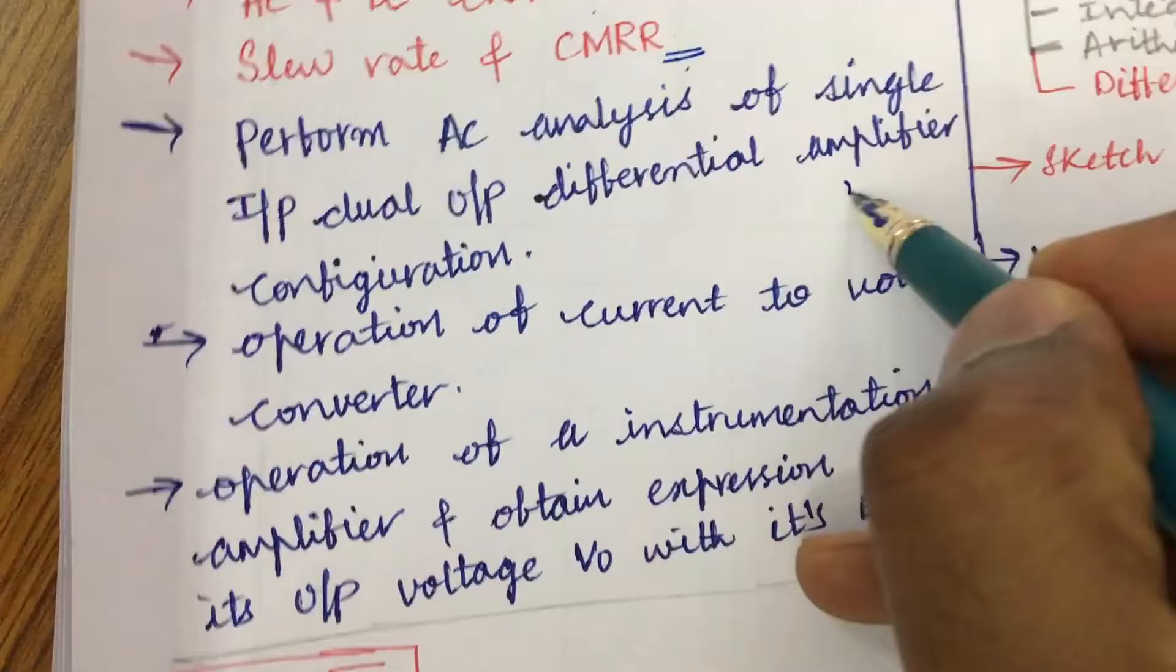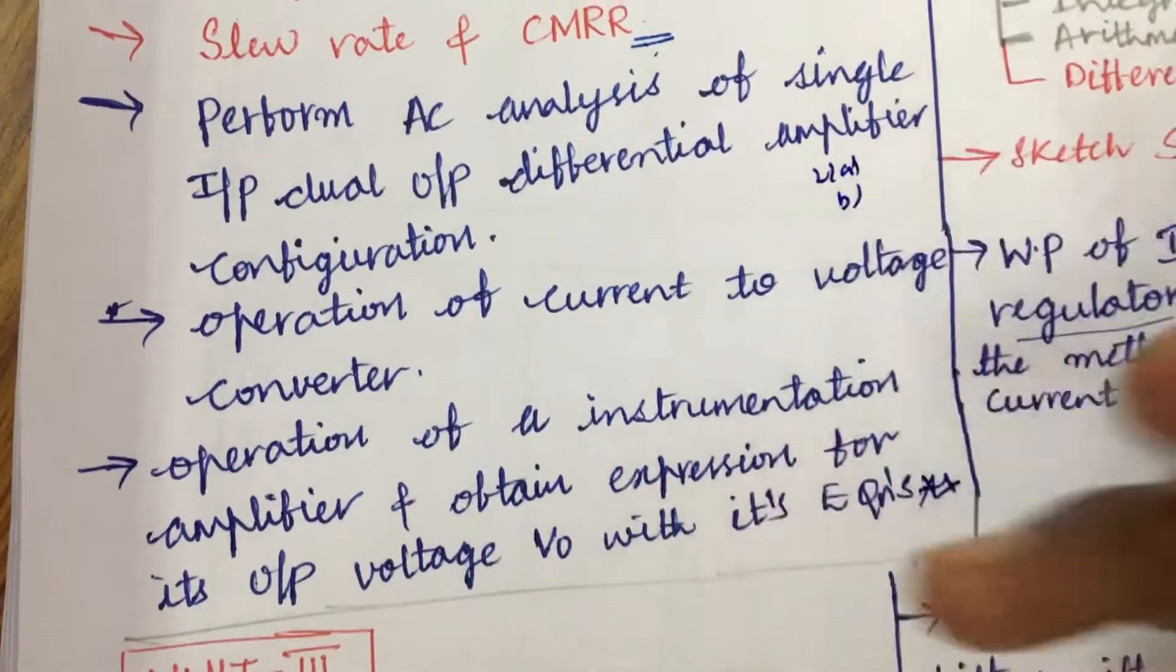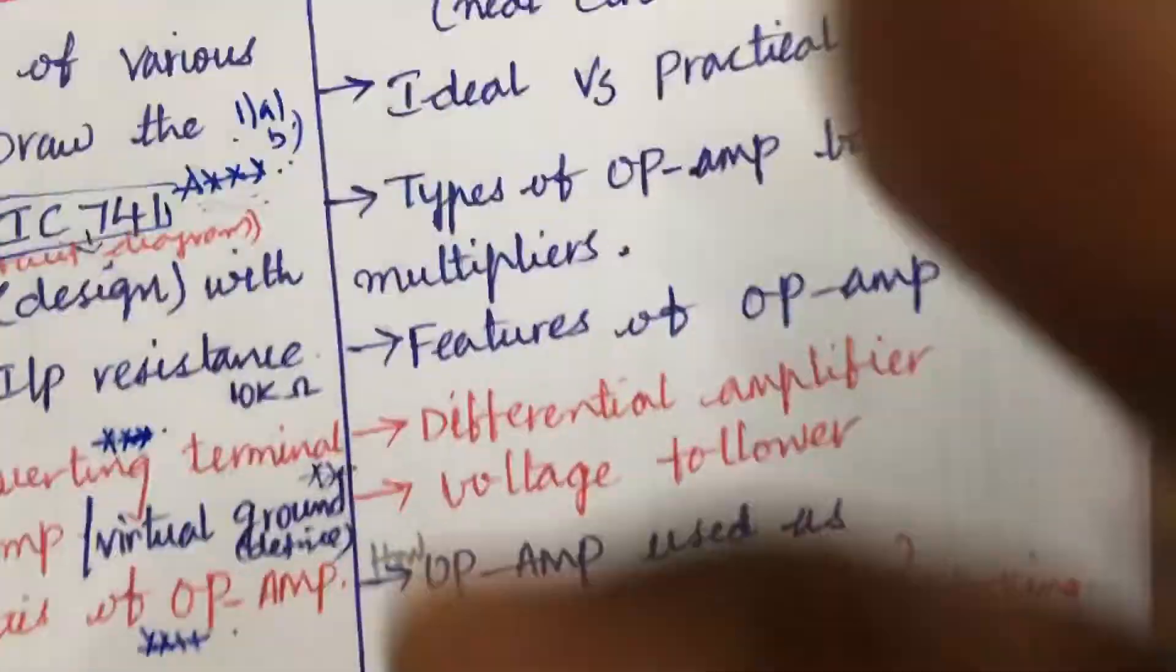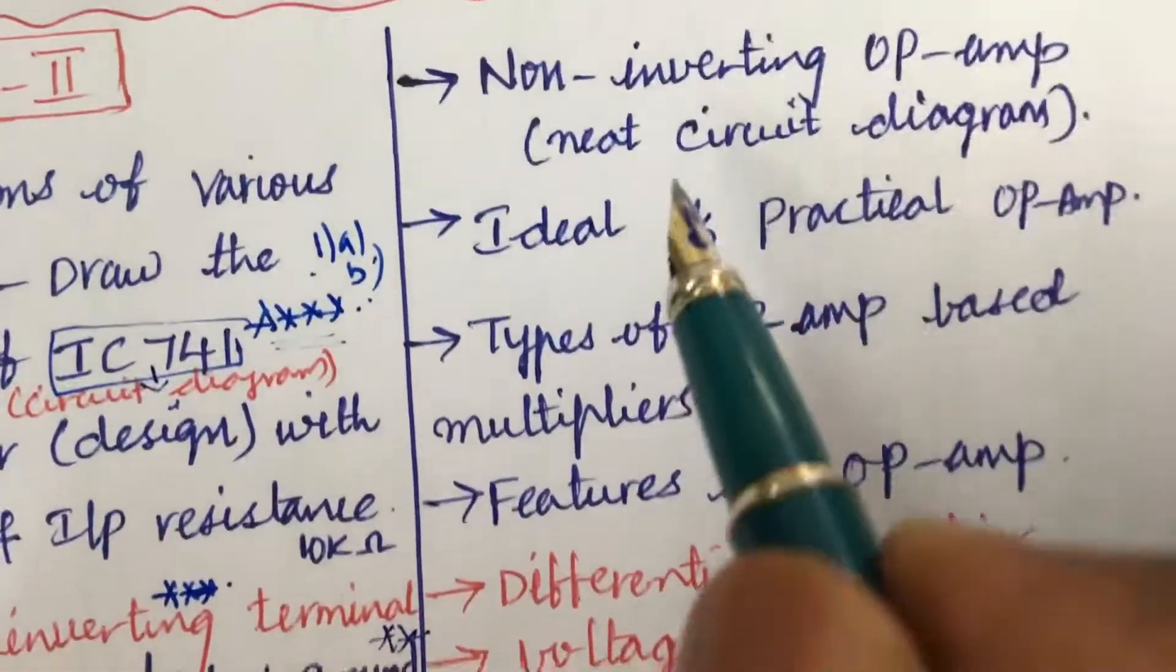From this part we can expect 2A as well as 2B and do not expect direct 15 marks. You will be getting 7, 8 or 10.